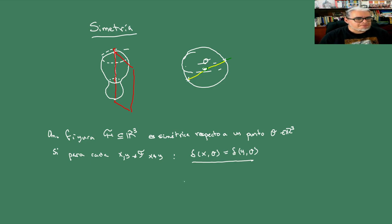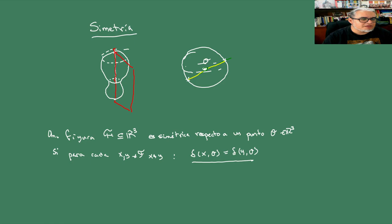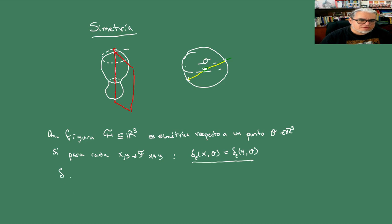Ya declaramos que tenemos que medir. Todo el mundo sabe cómo medir distancias euclidianas en el plano euclidiano. Pero aquí vamos a tratar de definir de forma general una distancia —que a lo mejor ya hicieron en sus cursos de cálculo o de álgebra lineal. Esta delta es la métrica euclidiana en R³.